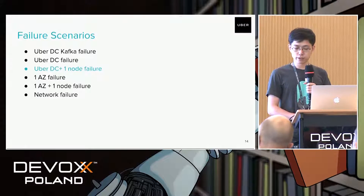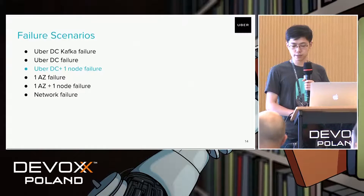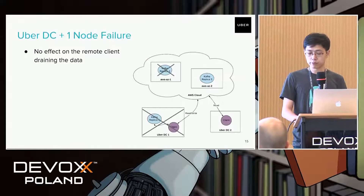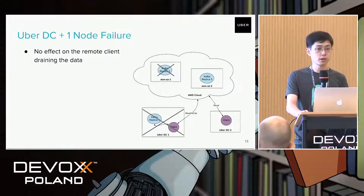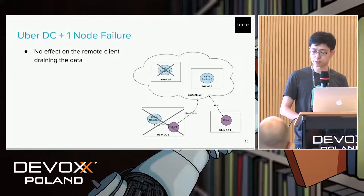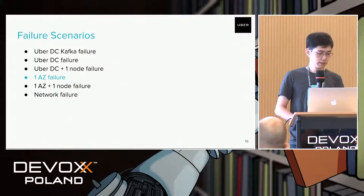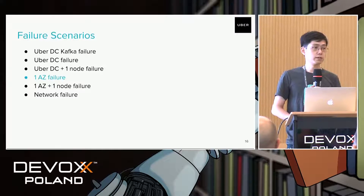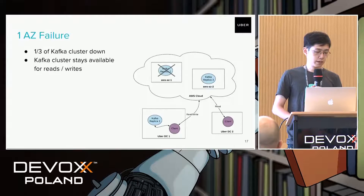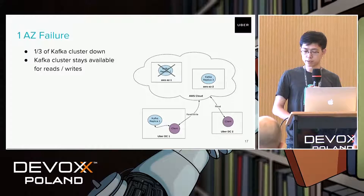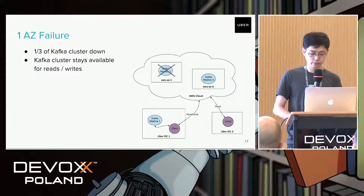The next failure scenario is the Uber data center down plus one node in the cloud is also down. Similar to the previous one, writes stop but clients in the remote data center can still read from the cloud since there is at least one replica available. The next scenario is one availability zone on the cloud is down. Similar to the first scenario, one third of the Kafka cluster is down but the whole cluster is available in the cloud for read and write for all clients.